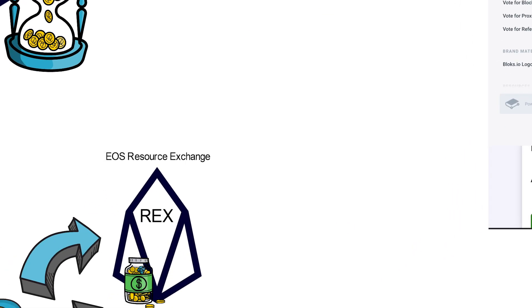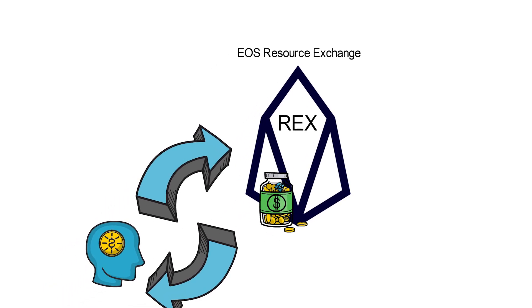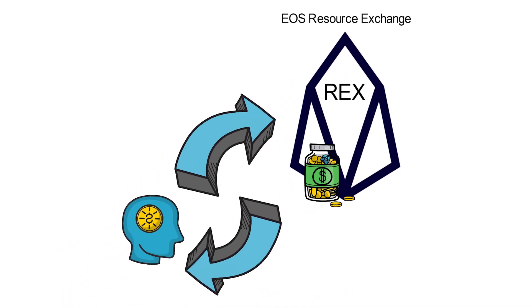REX, as defined by Blocks.io, is a resource exchange on EOS. It's a marketplace to allow risk-free leasing of network resources — CPU and net. You need these resources to successfully make transactions on the EOS network.